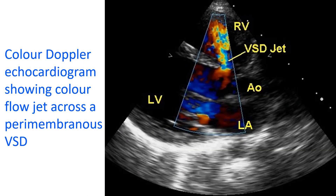VSD can be suspected clinically when there is a pan-systolic murmur in the left parasternal region. In small VSD, it is often a loud murmur due to the large pressure gradient across the defect, and is usually associated with a thrill. Small VSD is also called maladie de Roger. The murmur is softer in large VSD because the pressure gradient between the two ventricles will be low, as the presence of the large defect equalizes the pressures in the two ventricles.